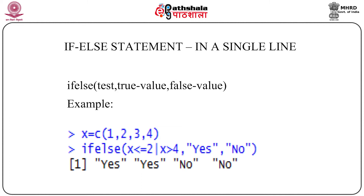Consider this example using the same x. Following the syntax of the ifelse() command, we put 'x <= 2' in the place of the test, then 'yes' as the true value and 'no' as the false value. By this way, we are actually getting the same result as the previous example but with minimal effort.